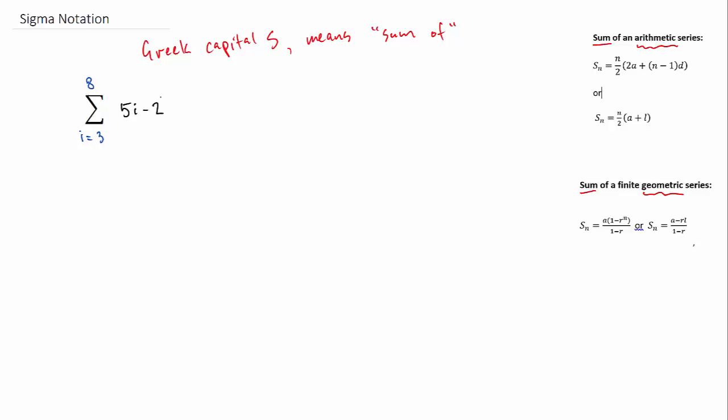For our example, I'm going to start with i equals 3, and we'll end with 8. So those are called index numbers. And the function we're going to deal with is 5i minus 2. So basically the bottom number is telling us where to start, and the top index number is telling us where to end.